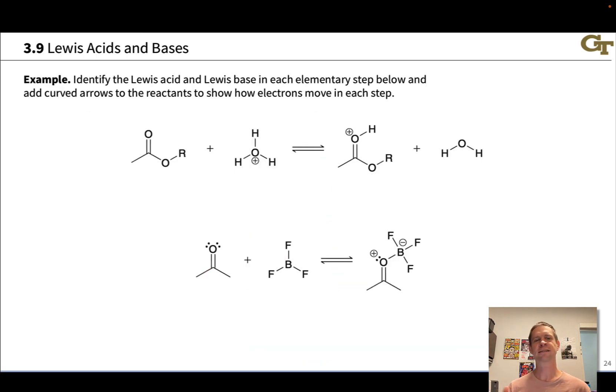To close here, let's practice identifying Lewis acids and Lewis bases in each of the elementary steps shown below. And we're going to add curved arrows to show how electrons flow in these elementary steps. Okay, let's start with the first example just by adding lone pairs in the vicinity of the reactive centers. We can notice, for example, this oxygen forms a bond, and this oxygen, a bond breaks to that oxygen. So let's add in lone pairs around those reactive centers, like so.